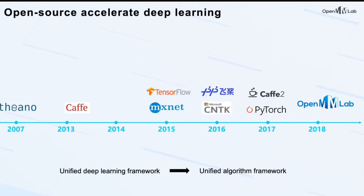With the development of deep learning and computer vision, big companies and research institutes open sourced deep learning frameworks such as Caffe, TensorFlow, and PyTorch. Today PyTorch has almost dominated the AI research community. With these frameworks, the cost of conducting research and implementing algorithms greatly decreases, and more researchers tend to release code when a paper gets published. On top of PyTorch, we hope to push one step forward from a unified deep learning framework to a unified algorithm framework.